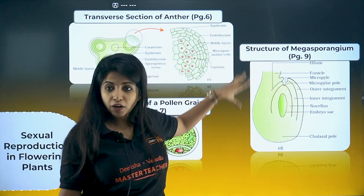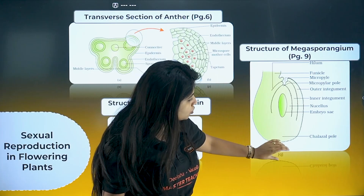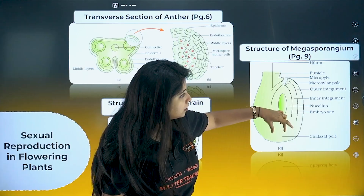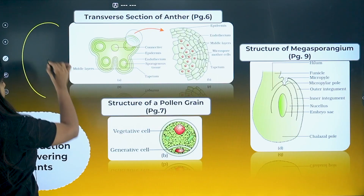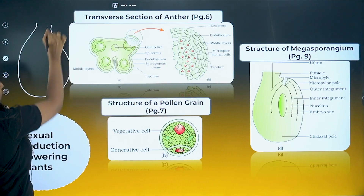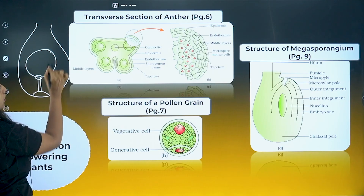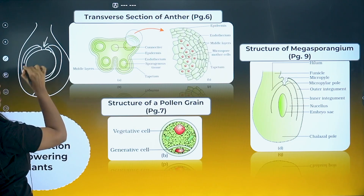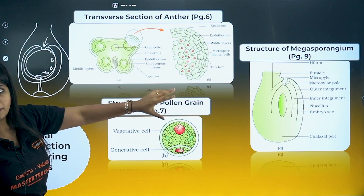The structure of megasporanthium — this is the anatropous ovule. Make the normal megasporanthium structure with the embryo sac. The ovule is attached to the placenta through the funicle; the point of attachment is the hilum. There are two integuments — make sure the integument is not covering the micropyle region. Inside, you have the cells of nucellus. Mention all of this properly.